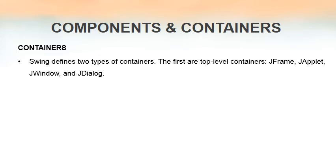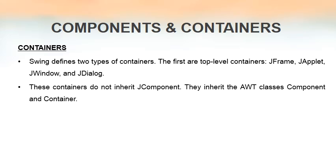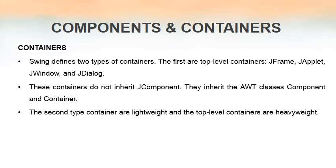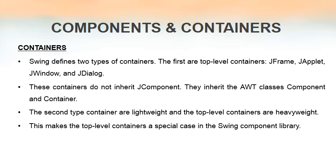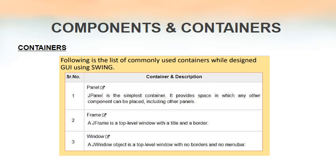In Swing there are two types of containers. The first type is top-level containers: JFrame, JApplet, JWindow, and JDialog. They are called top-level because these containers do not inherit JComponent. Instead, they inherit the AWT classes Component and Container, making them heavyweight. All other Swing components inherit JComponent and are lightweight, which makes top-level containers a special case in the Swing component library.